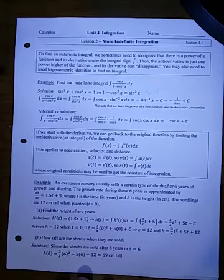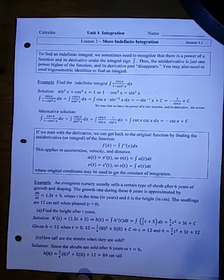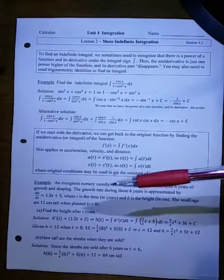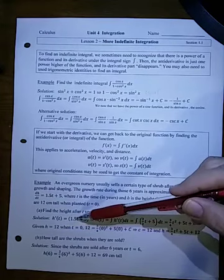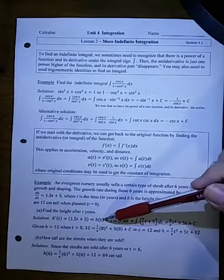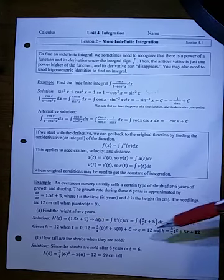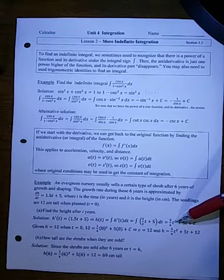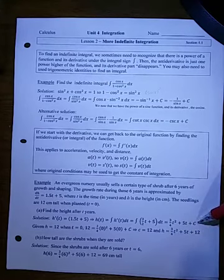So an evergreen nursery usually sells a certain type of shrub after six years of growth and shaping. The growth rate during those six years is approximated by dh/dt equals 1.5t plus 5, where t is the time in years, and h is the height in centimeters. The seedlings are 12 centimeters tall when planted, meaning when t is 0. So what would the height after t years be? Well, we're given that h prime of t is 1.5t plus 5, so now if we want h of t, we have to take the antiderivative of that. And if you take t squared, that would have the reciprocal of 1 half. 1 half times that 3 halves is 3 fourths, and 5 would have to be 5t, and then we have to add a constant of integration.